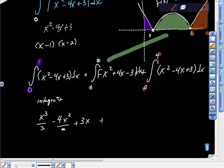Plus, negative x cubed over 3 plus 4x squared over 2 minus 3x, plus we're going to integrate this again, is x cubed over 3 minus 4x squared plus 3x.